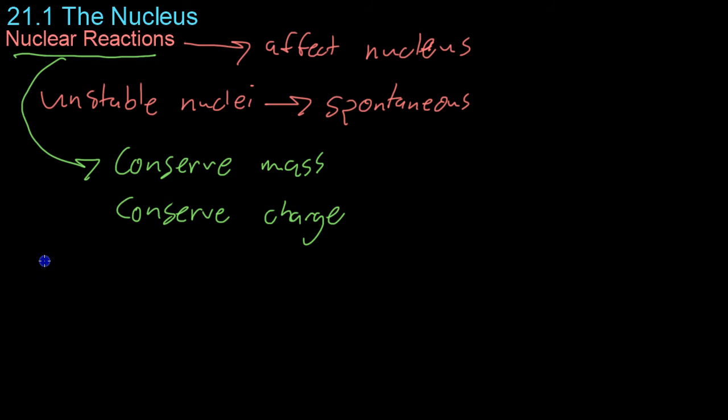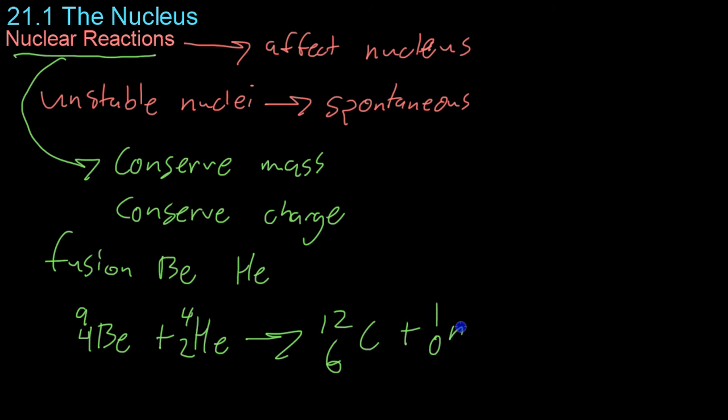So, for example, if we have the fusion of beryllium and helium, in this case, we have beryllium 9 fusing with helium 4 to form carbon 12 and a neutron. You'll notice that the total mass number stays the same on either side. You have 9 plus 4 is 13 over here and 13 over here. Likewise, the proton number, so the total charge number, is 6 on the left and 6 on the right.